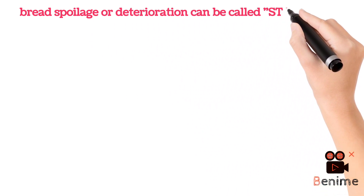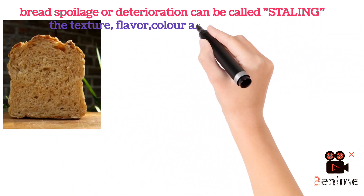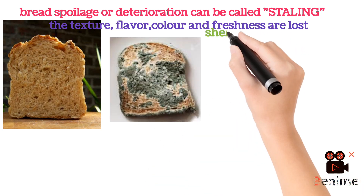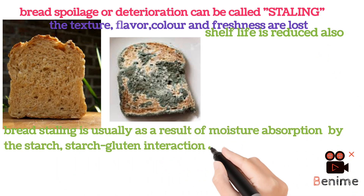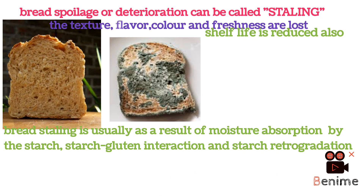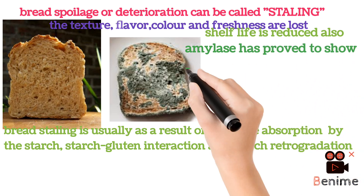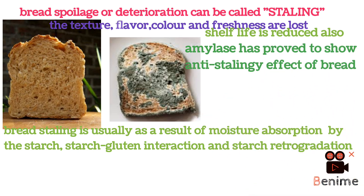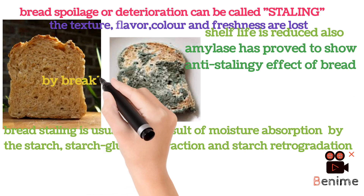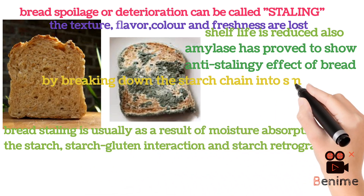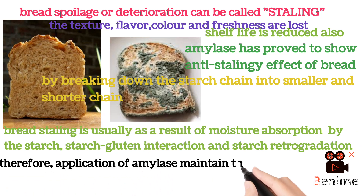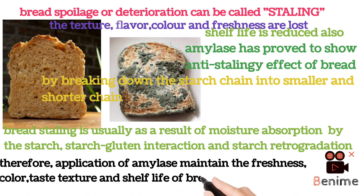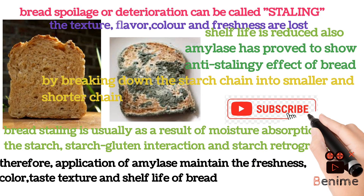Bread spoilage can be called staling. The texture, flavor, color, and freshness are lost, and the shelf life is reduced. Staling of bread results from moisture absorption by the starch, starch-gluten reaction, and starch retrogradation, meaning that starch is the major player in bread staling. Amylase has proven to reduce bread staling by breaking down starch into smaller and shorter chains. Therefore, application of amylase can maintain the freshness, color, texture, and shelf life of bread.